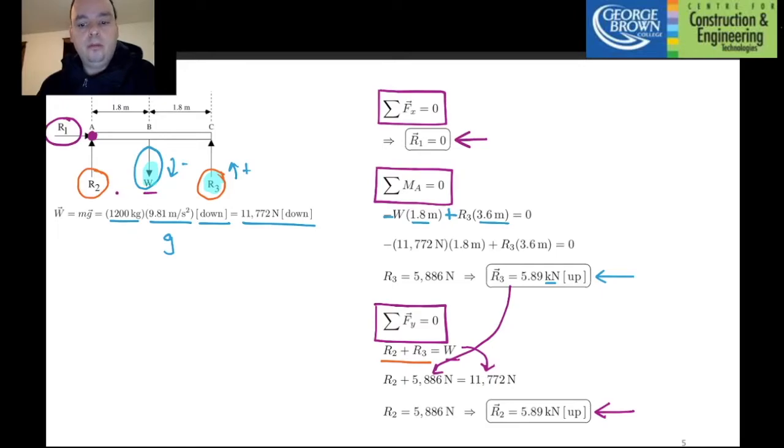One more thing. This question is very basic in terms of intuition. Meaning you could just guess the answer for R2 and R3 being half of the weight. If you take the weight and divide by 2, you get 5886 newtons. And that's because of symmetry. So if you do see symmetry in a question, take advantage of it. Because you should.